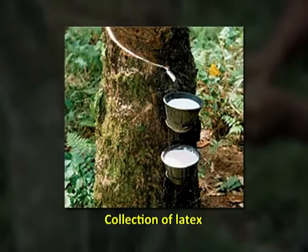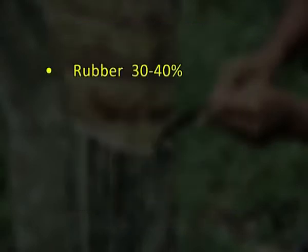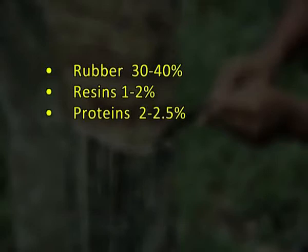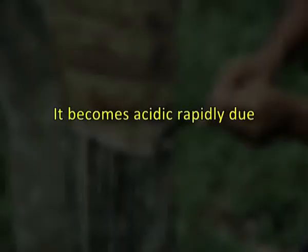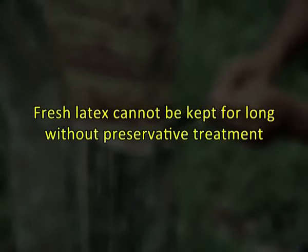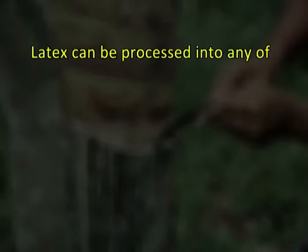Latex and peeled coagulum are highly susceptible to bacterial action, so it is essential to process them into forms that allow safe storage and marketing. Latex is a white or slightly yellowish opaque liquid. Its general composition is: rubber 30 to 40 percent, resins 1 to 2 percent, proteins 2 to 2.5 percent, sugar 1 to 1.5 percent, ash 0.7 to 0.9 percent, and water 55 to 65 percent. Fresh latex as it comes from the tree is slightly alkaline or neutral; it becomes acidic rapidly due to bacterial action. The formation of organic acids neutralizes the negative charge on rubber particles and the latex gradually coagulates on keeping. Therefore, fresh latex cannot be kept for long without preservative treatment.